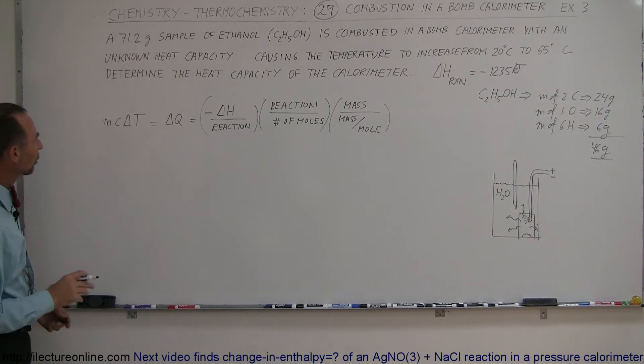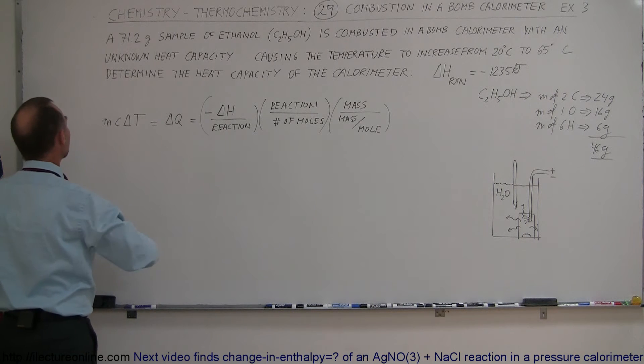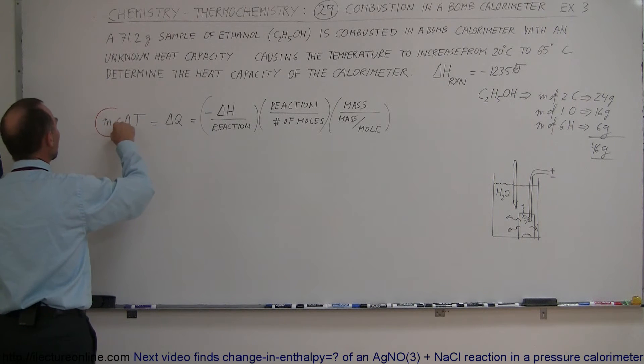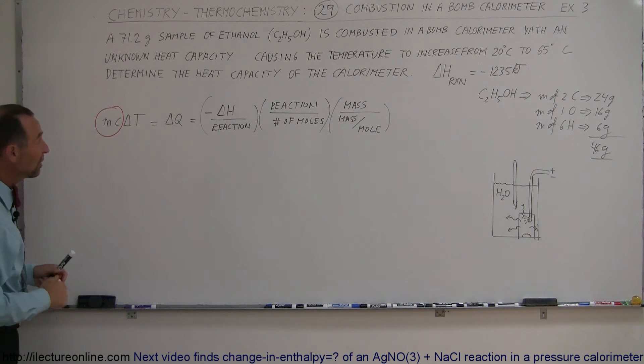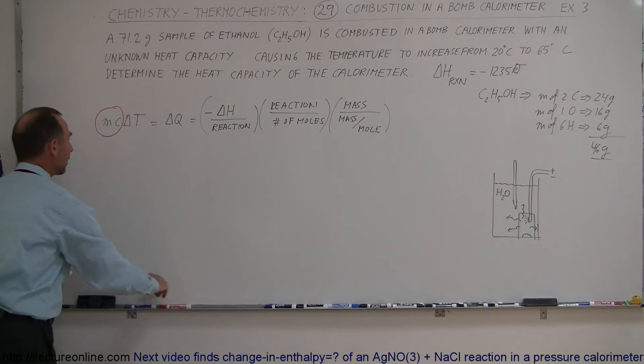What are we looking for in this case? We're looking for the MC, the heat capacity of the calorimeter, which is the MC portion in that equation, which means we're going to have to divide both sides of the equation by the change in the temperature, in order to calculate the heat capacity MC.